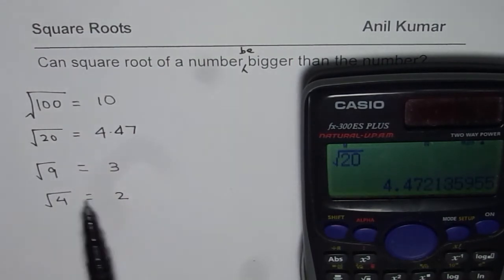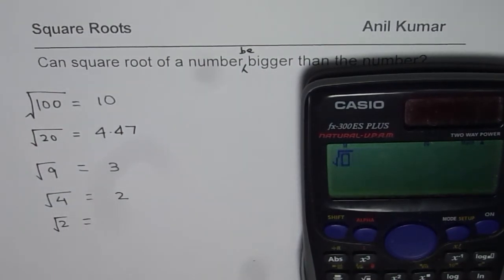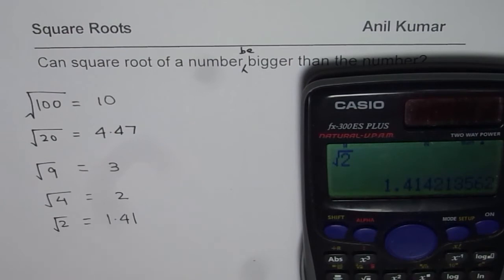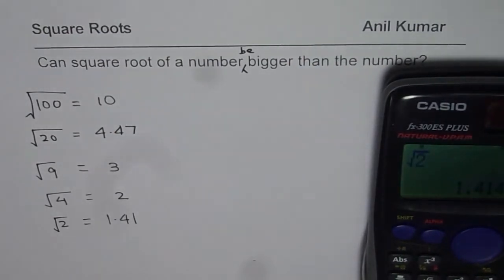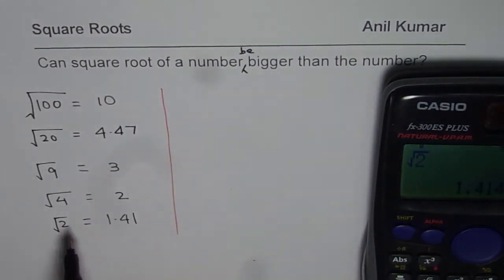the value is closer, right? Square root of 2, for example, is square root of 2 equals to in decimals 1.41. Now, 1.41 is close to 2. So what you notice is that the square root becomes closer to the number as the number decreases.